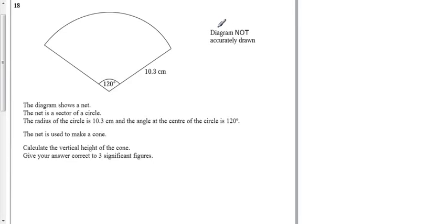This diagram shows a net. The net is of a sector and it's used to make a cone. So let's kind of get an idea of what's going on here.